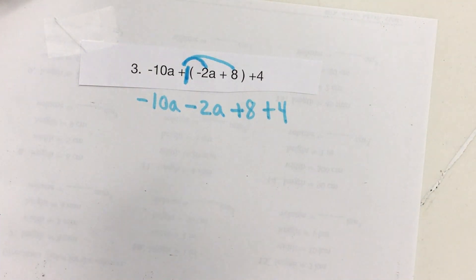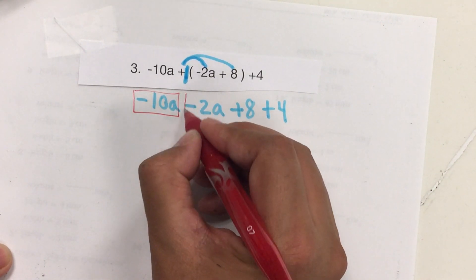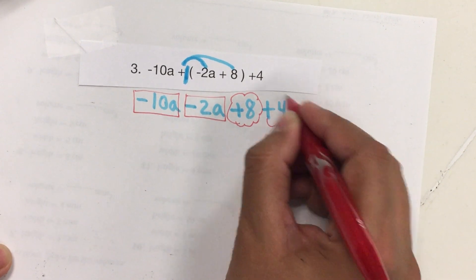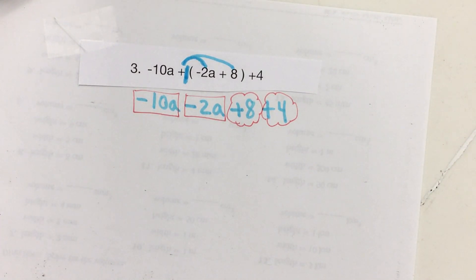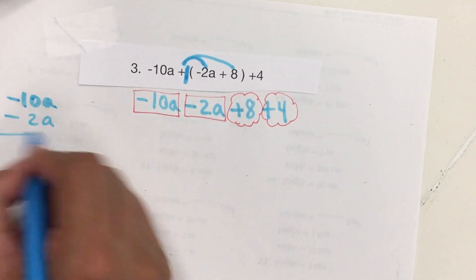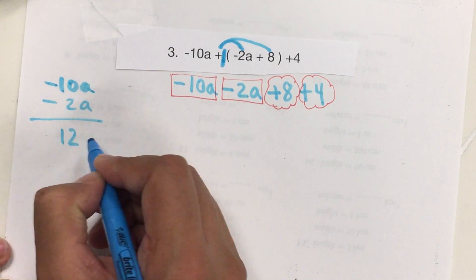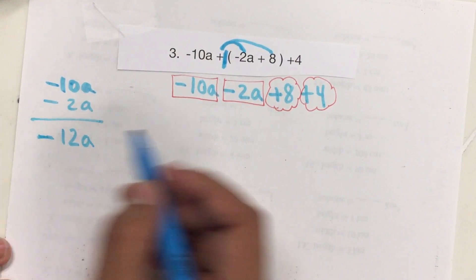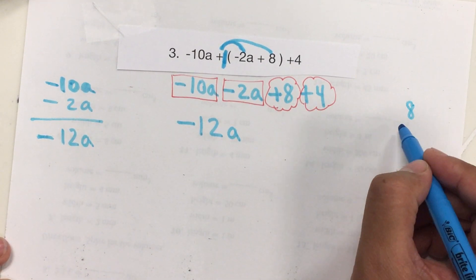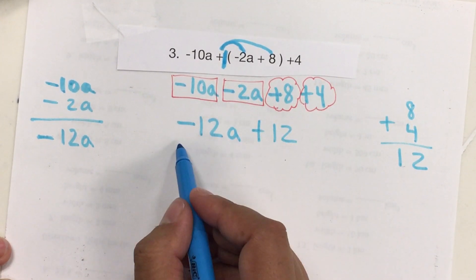We look for like terms. I notice that I have negative 10A and this also has A, so negative 2A. And these two are constant numbers: positive 8 and positive 4. We combine them. Negative 10A and negative 2A — same sign, we're going to add: 10 plus 2 is 12A, and keep the sign of the bigger one, which is negative. So it's negative 12A. For 8 and 4, both are the same sign, so 8 plus 4 is 12. So the answer is negative 12A plus 12.